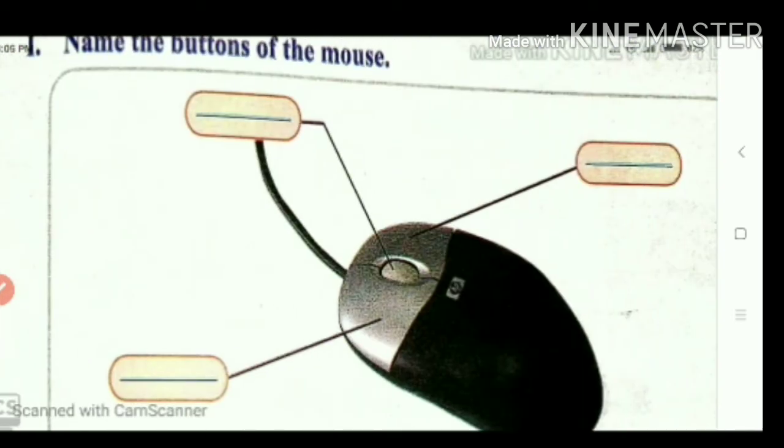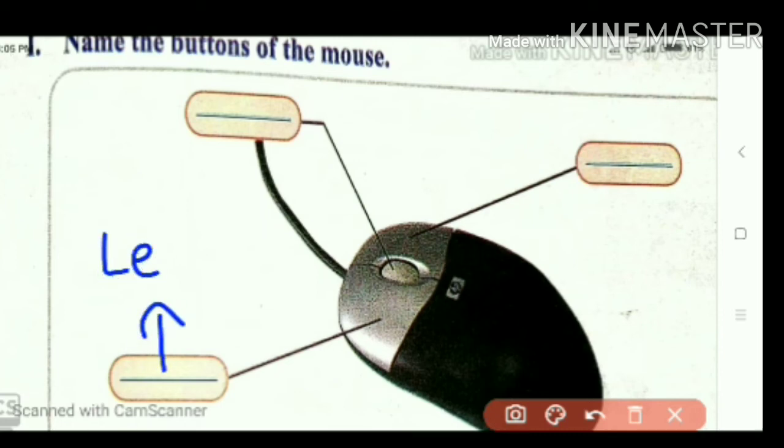Name the buttons of the mouse. Can you tell which buttons are these? This is a left button. Here you write on the line properly. L-E-F-T, left button. This is right button.